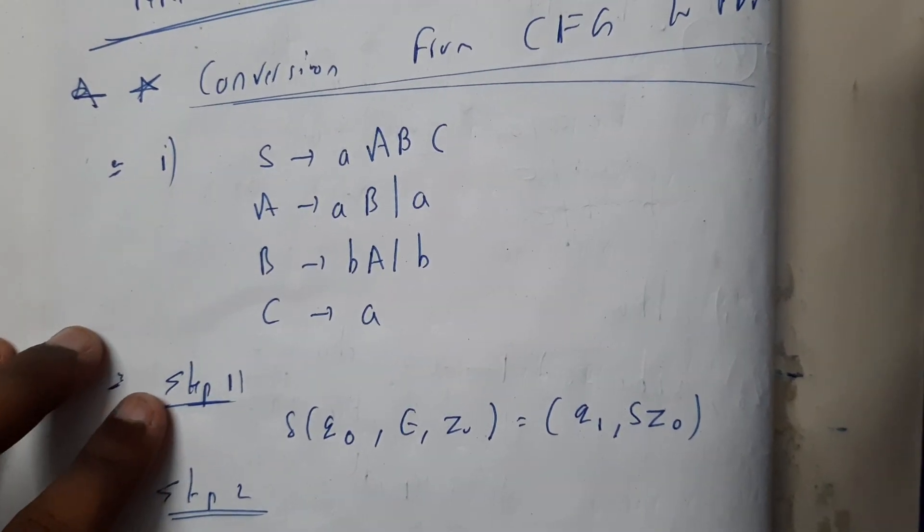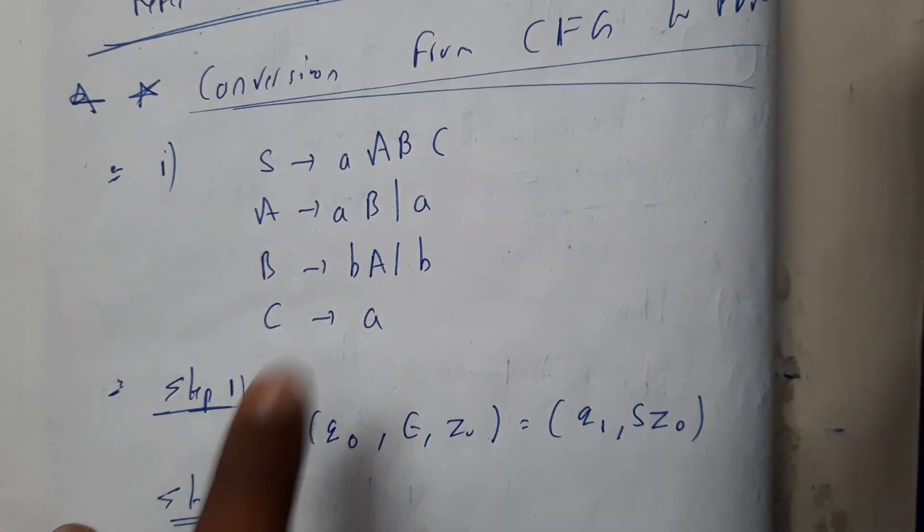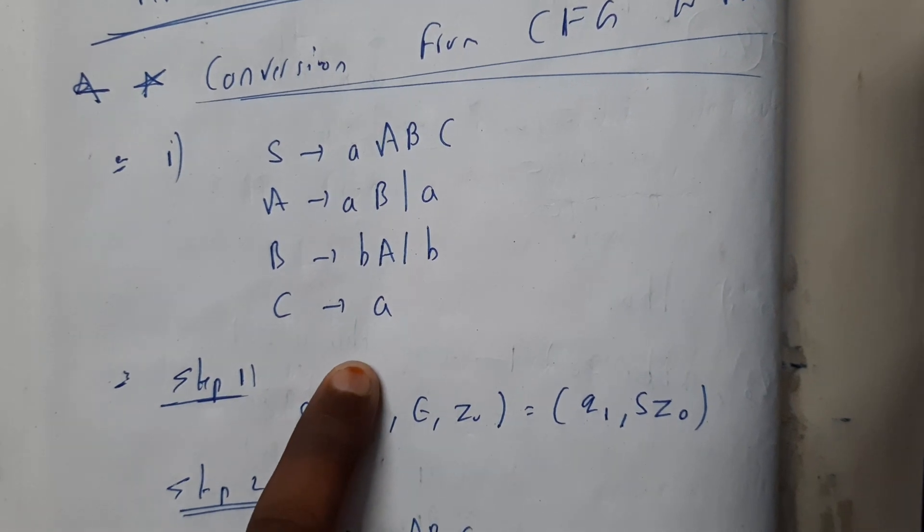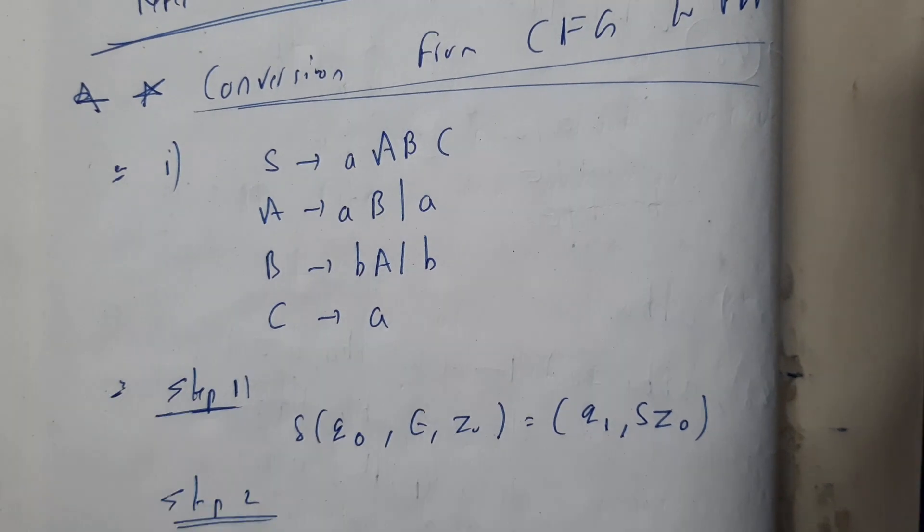B tends to b A or a, C tends to a. So please note that always the grammar should be in GNF to convert it into PDA. The grammar should be in GNF.